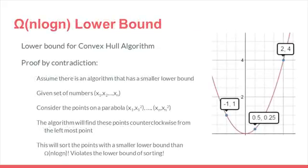Finding a convex hull has a N log N lower bound. We can prove this by contradiction. We can assume that there is an algorithm that has a smaller lower bound and then given a set of numbers, we would plot the points on a parabola and the algorithm would find these points in a counterclockwise manner from the leftmost point. This would sort the points with a smaller bound than N log N, violating the lower bound of sorting.